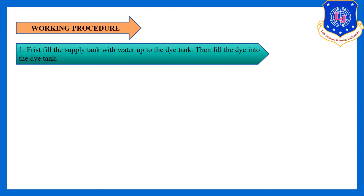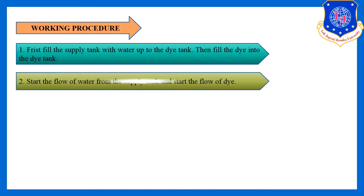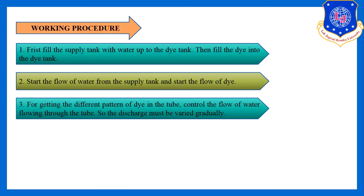Let's understand the working procedure. First, fill the tank with water and the dye tank with dye. Then start the flow of both water and dye simultaneously. To get different patterns of dye in the tube — both laminar and turbulent — control the flow of water through the valve. The discharge must be varied gradually.